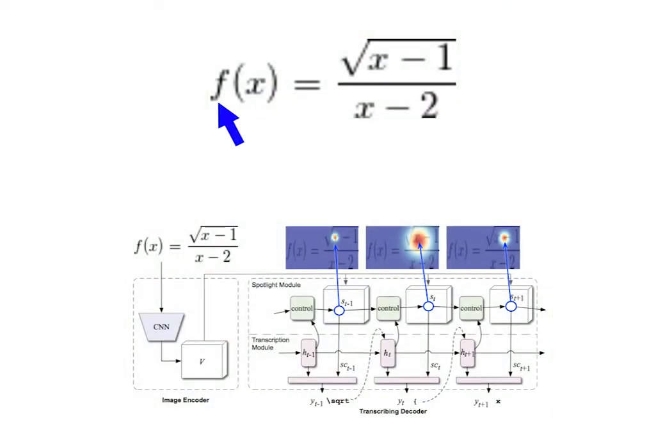It first decides where to look on the image by a separate Spotlight module. Then it decides what to write based on what it reads by the transcription module.